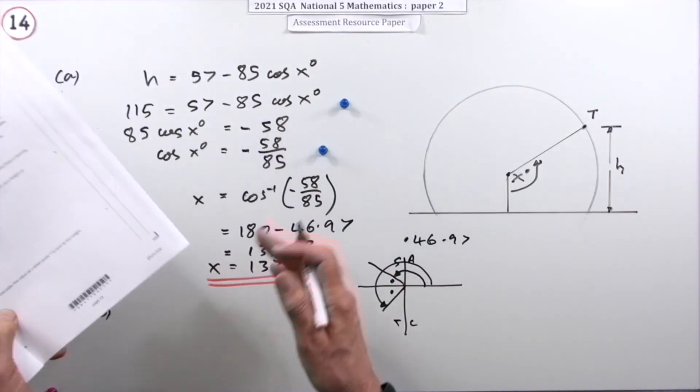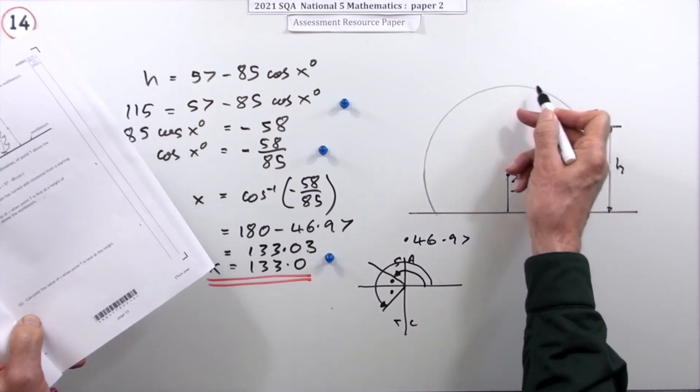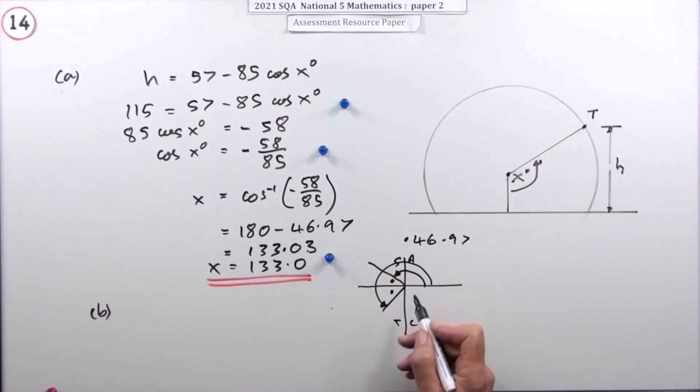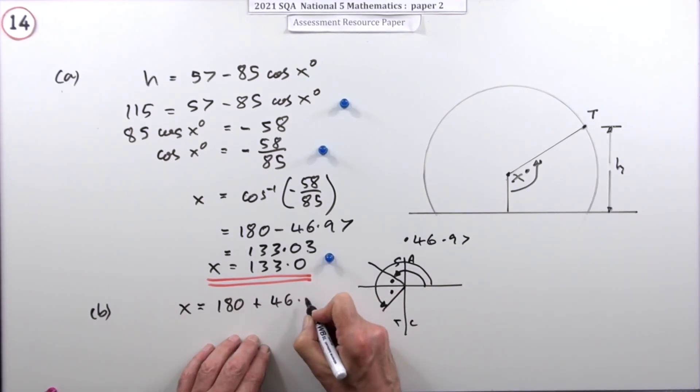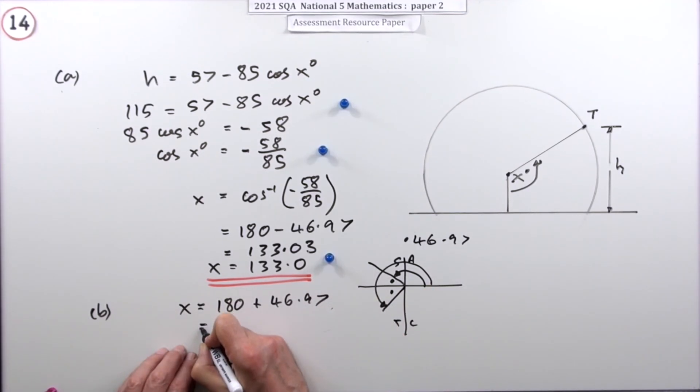When's it next at that height? Well, it just follows on from that. When it gets round to here, which is when it gets round to here, it's going to be 180 plus that, so it'll be 180 plus the 46.97. That'll be 226.97, which I'll just call 227.0.